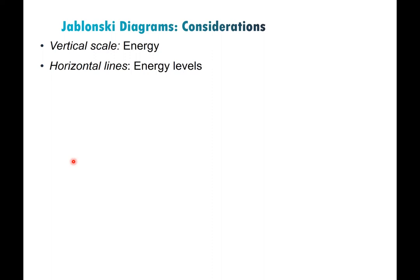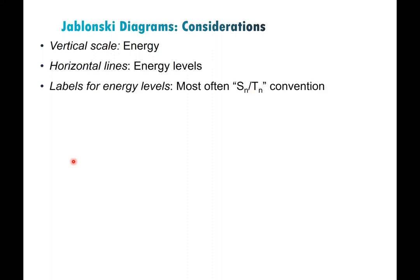Energy levels in Jablonski diagrams are labeled using the S/T convention: S means singlet, T means triplet, and the subscripted number indicates the relative ordering. S0 is your ground state, S1 is the first singlet excited state, T1 is the first triplet excited state, and so on. Those are the most common labels and what our Jablonski diagram will use today.